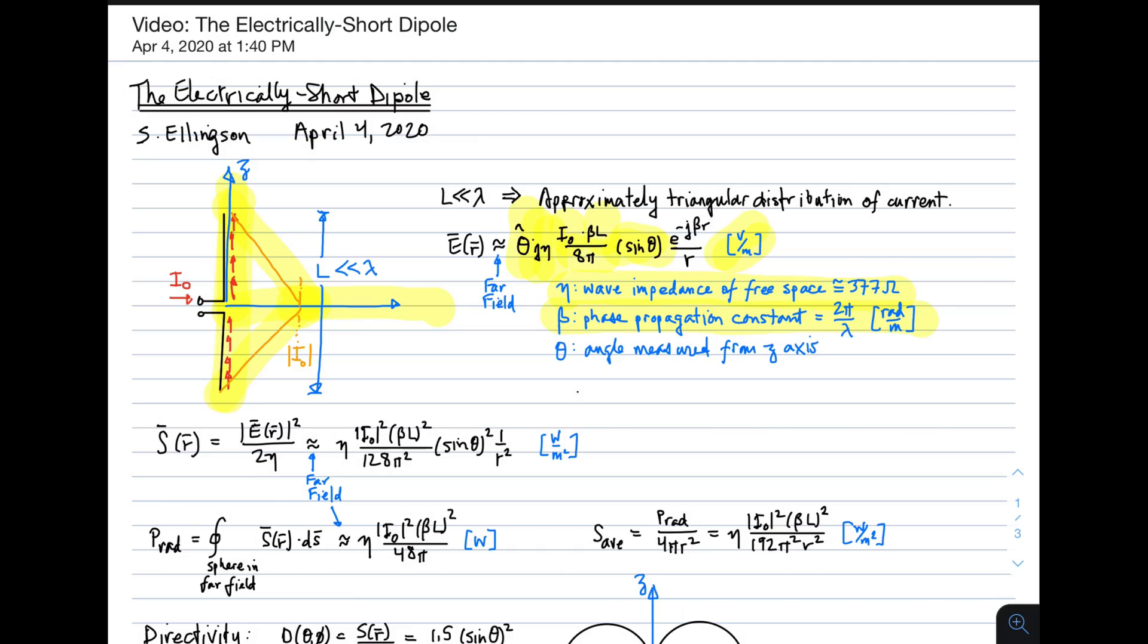So we say there's a null along the z-axis. In the far field, we see a spherical wave. There's the E to the minus J beta R over R dependence. That is a characteristic of all spherical waves. And then once again, just to emphasize, theta is the angle measured from the z-axis.